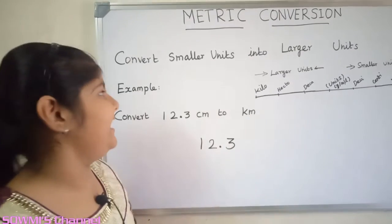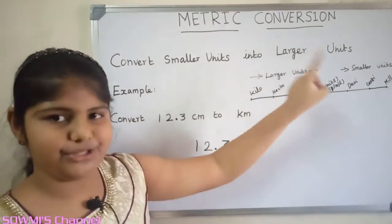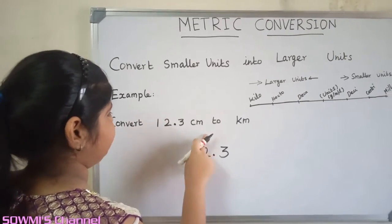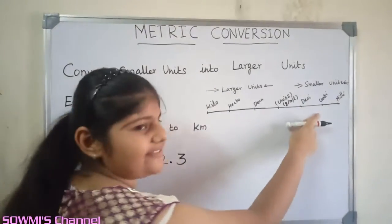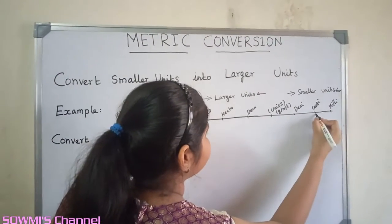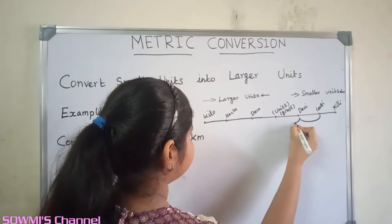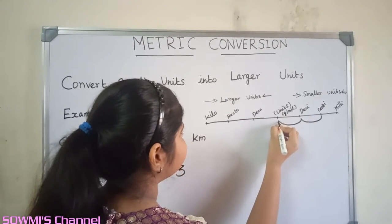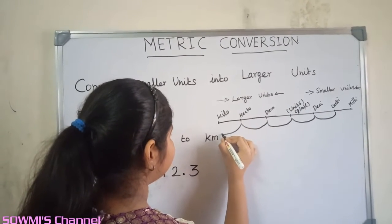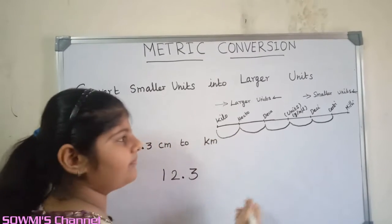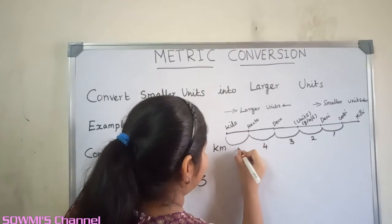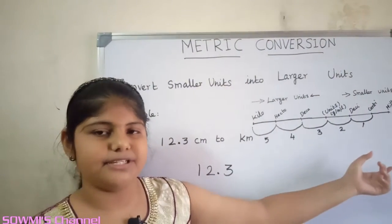Next we will see how to convert smaller units into larger units. Let us see some examples. Convert 12.3 centimeters to kilometers. First we have to count the jumps from centimeters to kilometers. There are five jumps to the left.